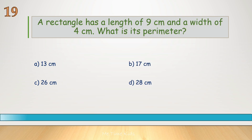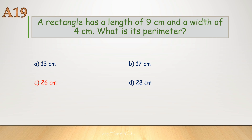A rectangle has a length of 9 centimeters and a width of 4 centimeters. What is its perimeter? Correct answer is C, 26 centimeters.